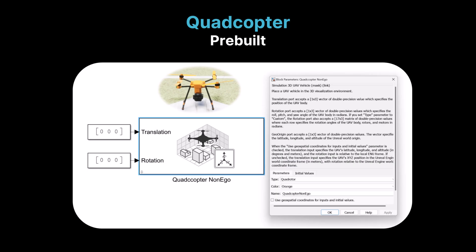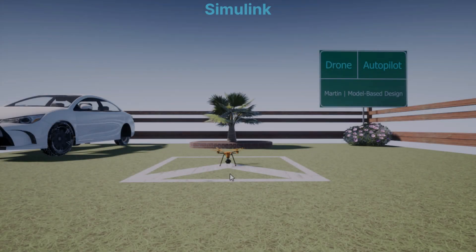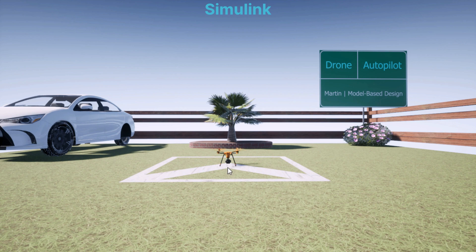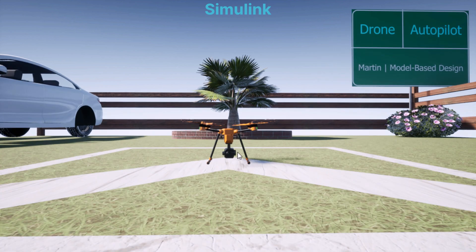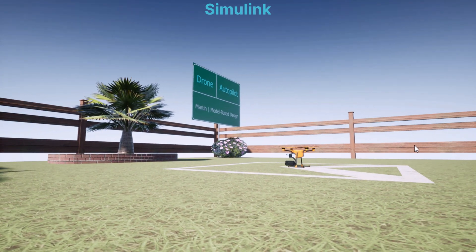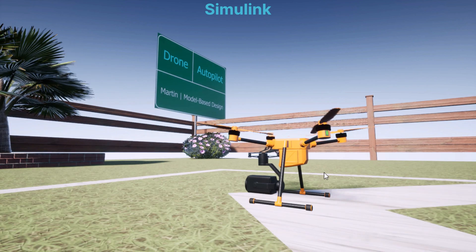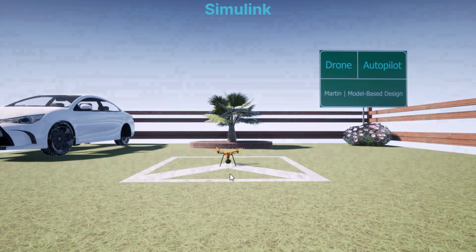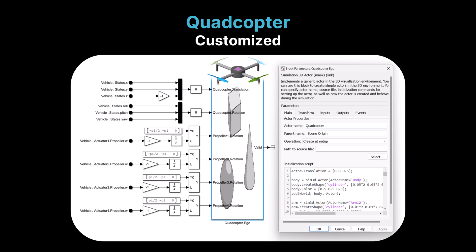Now that we have a scene set up, we'll move on to adding a quadcopter into the simulation. First, we can use the Simulation 3D UAV vehicle block, which provides pre-built 3D models of quadcopters for visualization within the scene. This shows how the pre-built 3D UAV model appears in Simulink during simulation, visualized using the Unreal Engine environment. It provides a clear, realistic view of the quadcopter's movement and orientation within the scene. Similar to customizing the scene, we can use the Simulation 3D actor block to customize the appearance and behavior of the quadcopter.